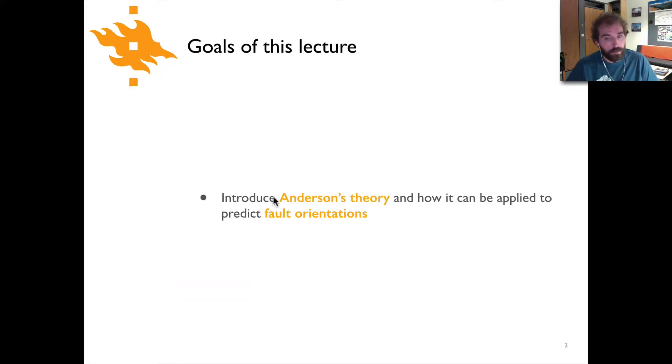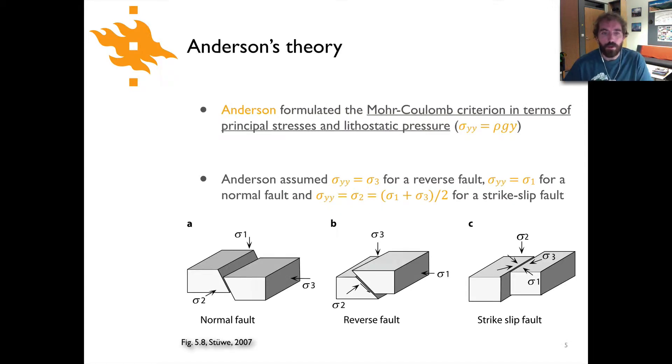We'll do this by first introducing Anderson's theory, and then talk about how that theory can be applied. The Anderson theory is basically a version of the Mohr-Coulomb criterion in which the principal stresses are used just like we had before, but combined with assuming a lithostatic pressure. In our case, we'd say sigma yy is equal to rho gy. We've seen this a number of times now.